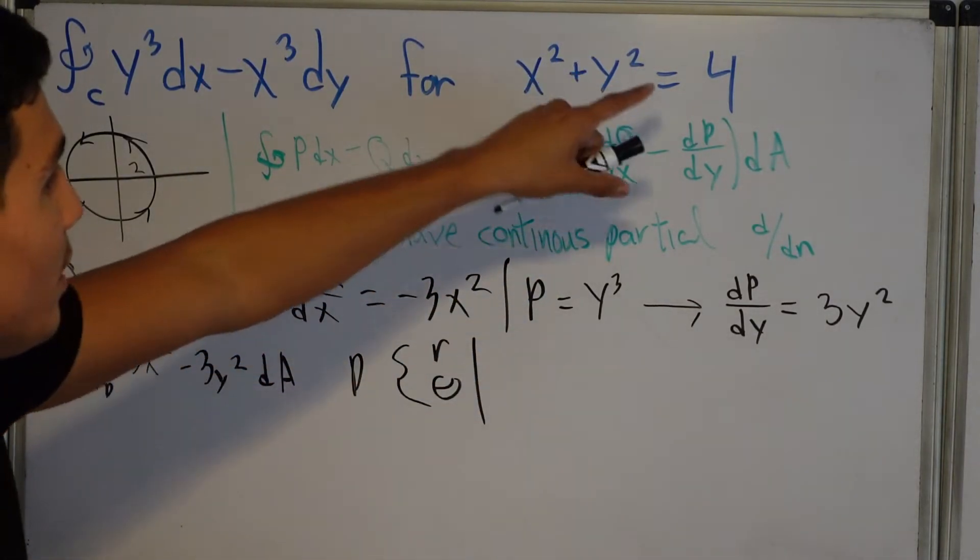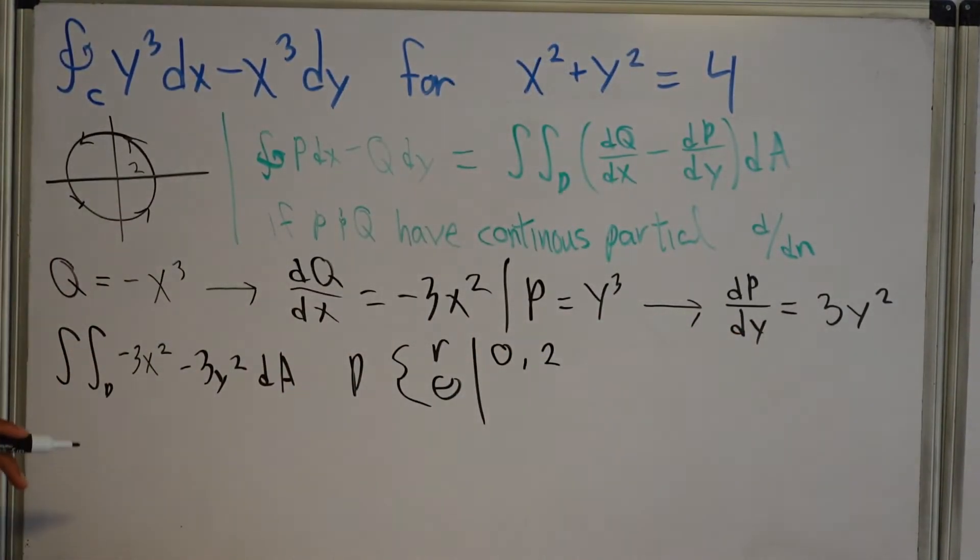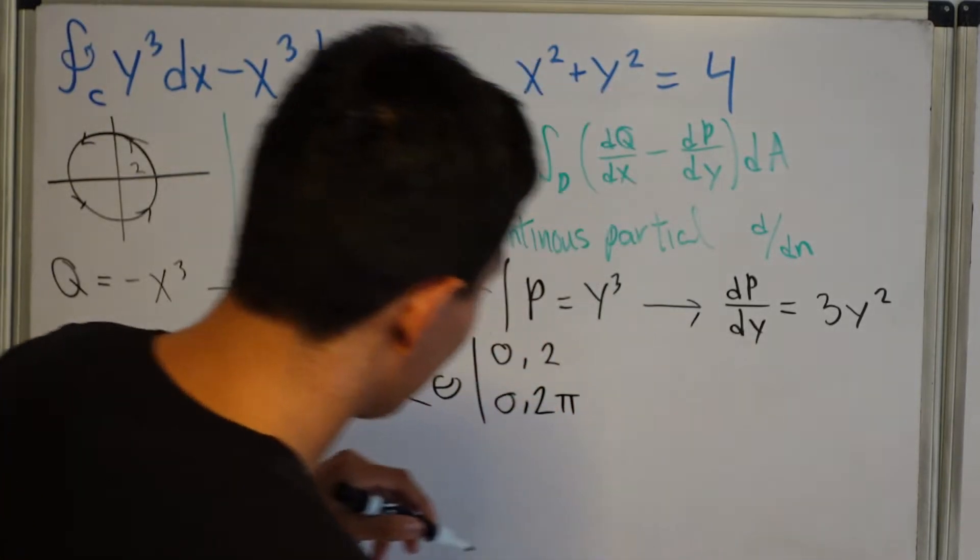Well, we know that R goes from 0 to 2, because this is radius 2. So 0 to 2. And then this is a full circle, so it goes from 0 to 2π, right?